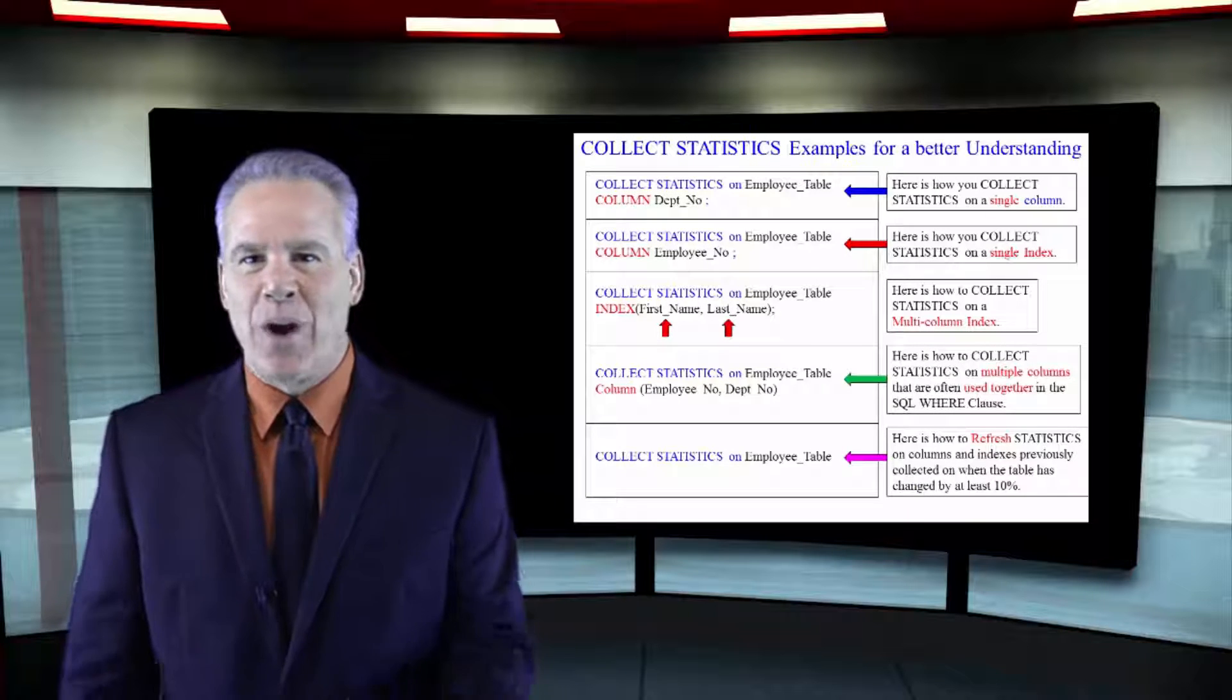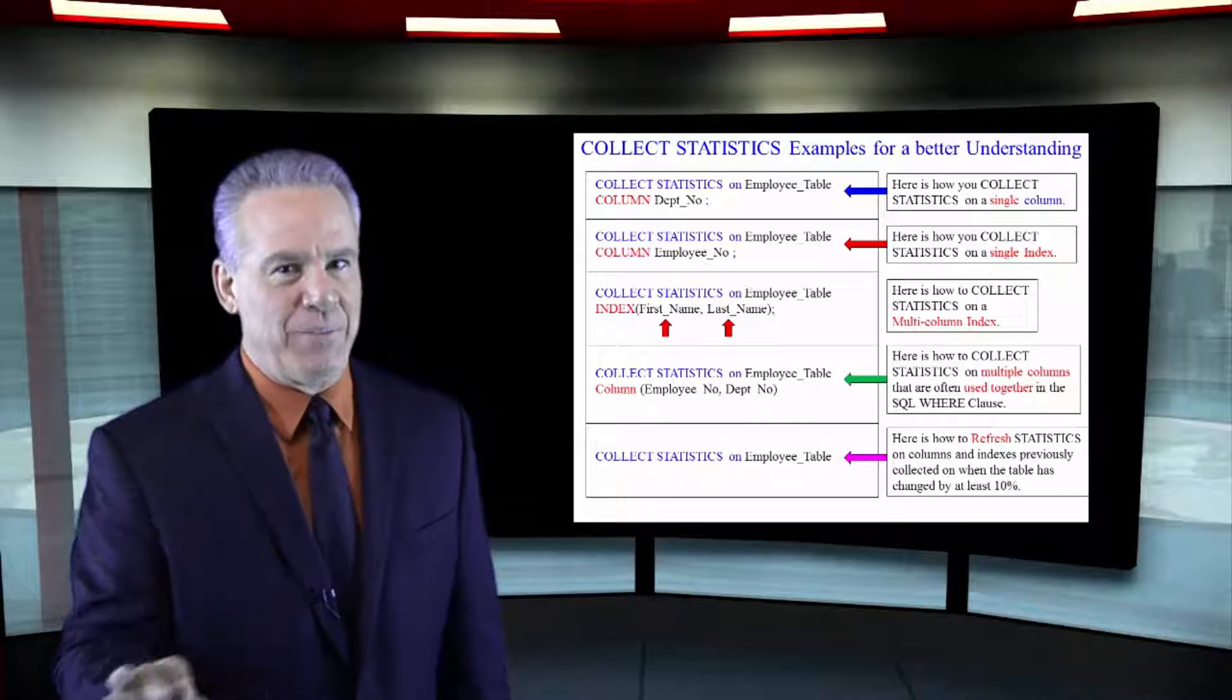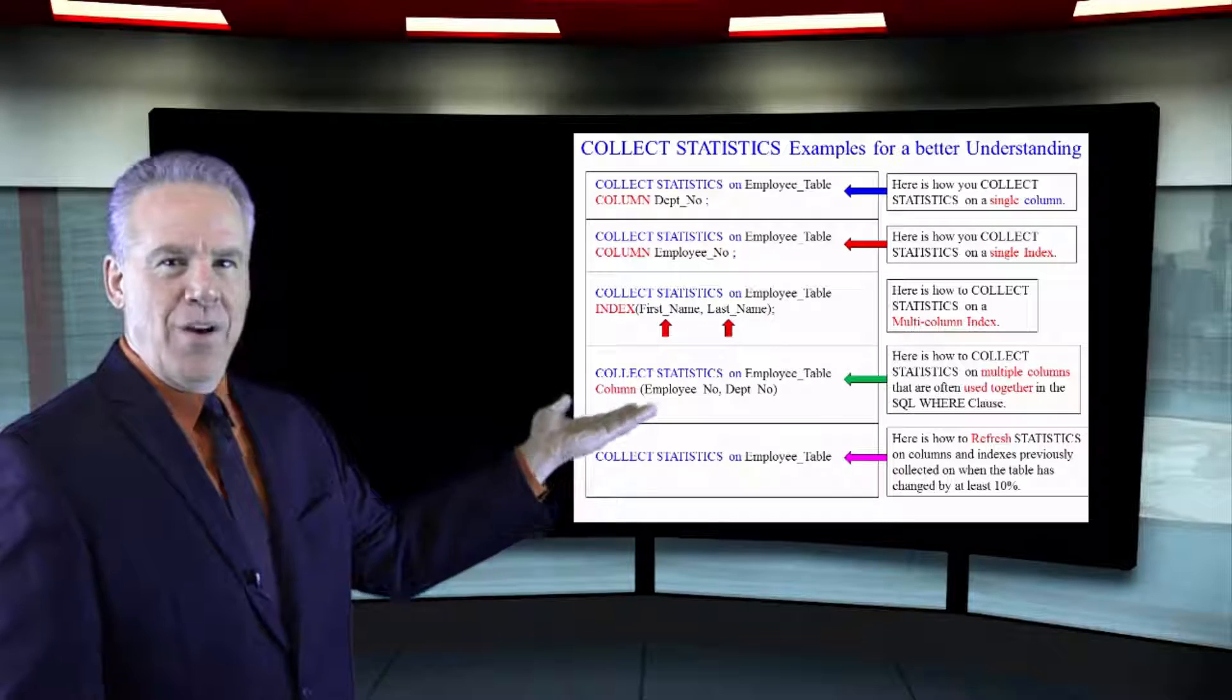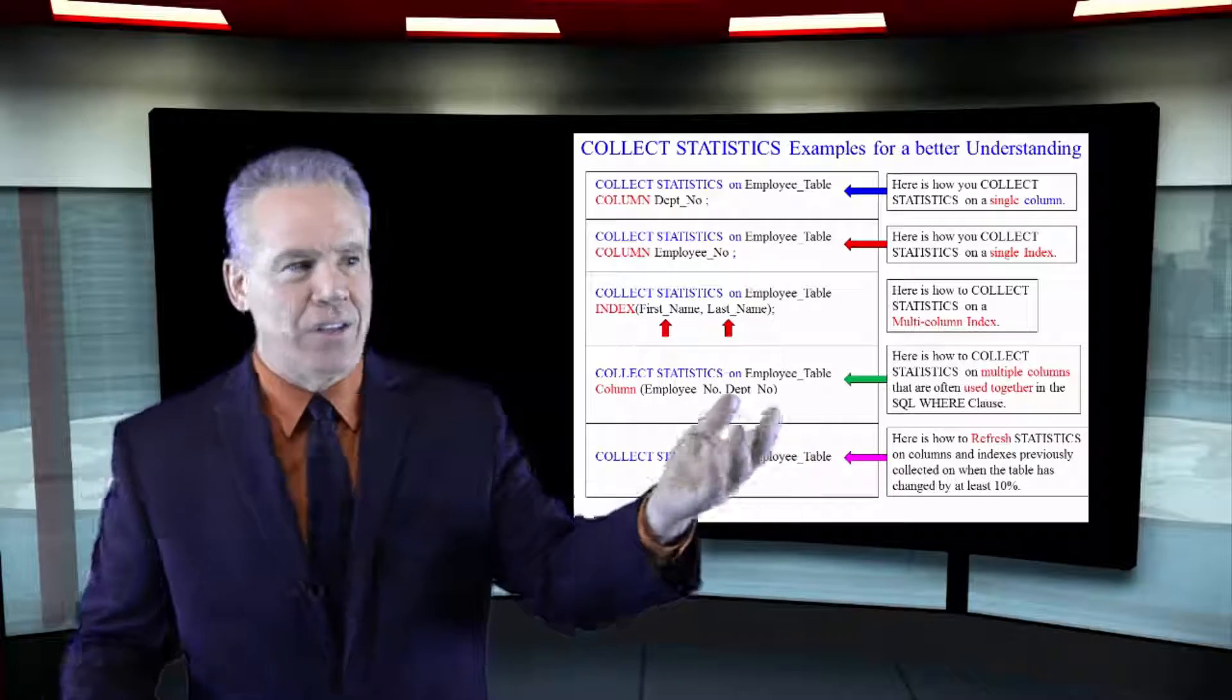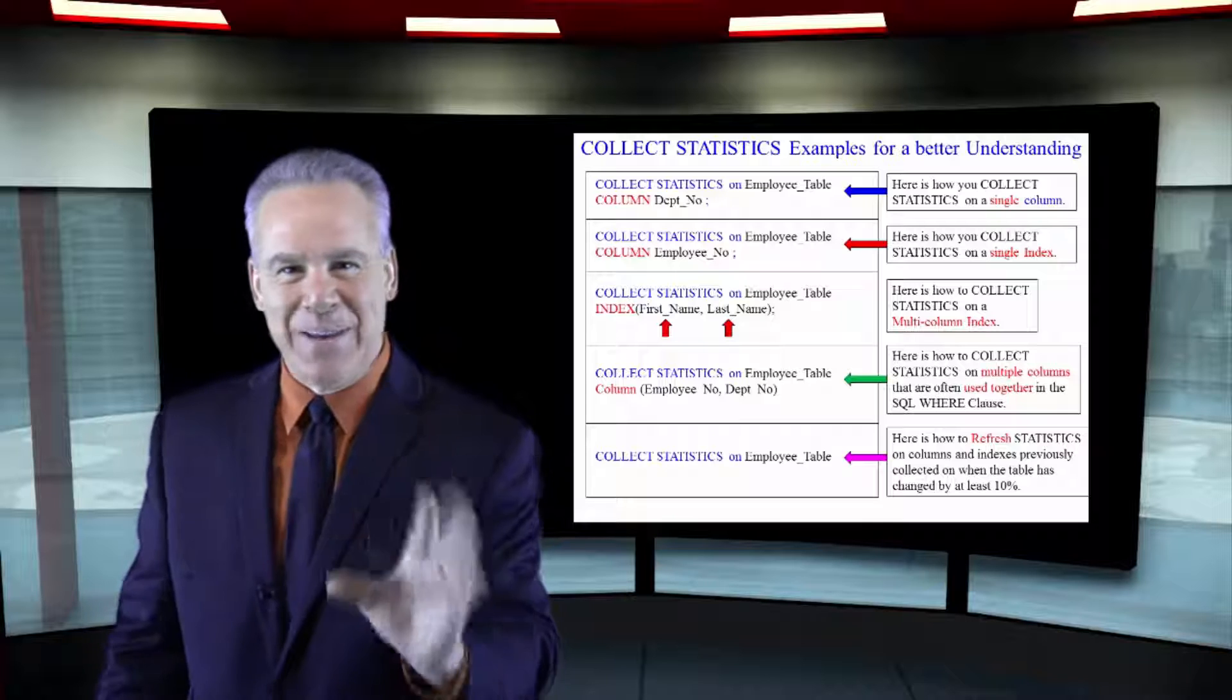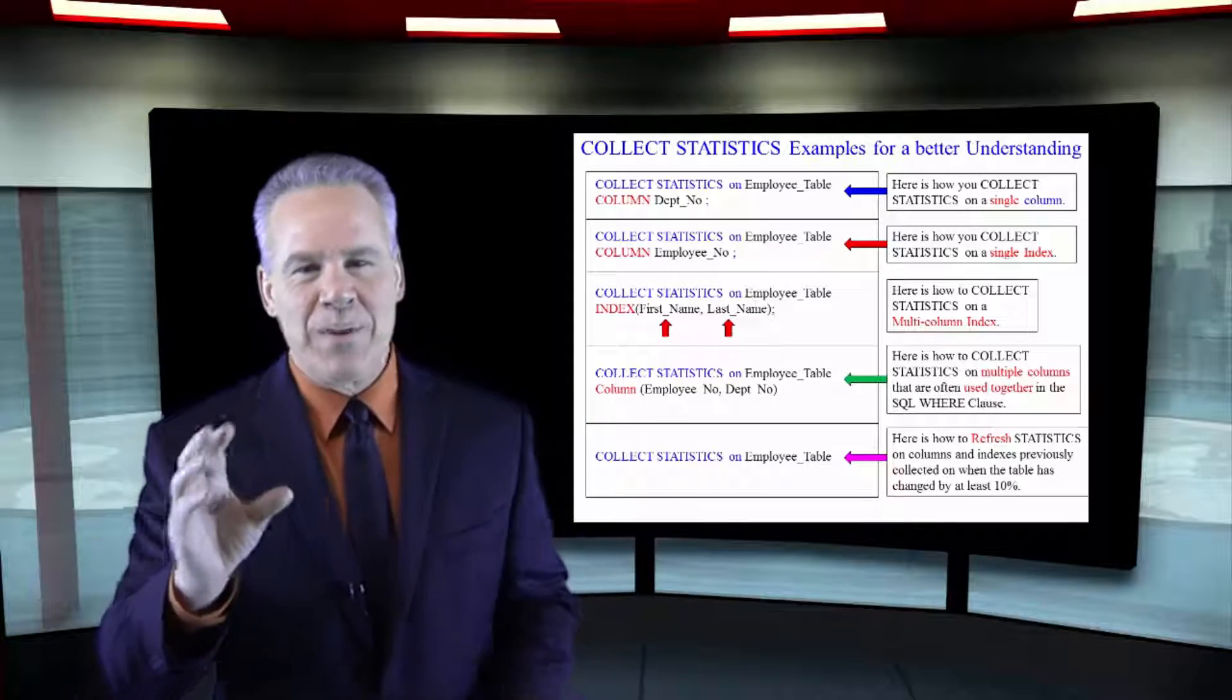This is important, so I want to make sure you see a lot of examples, and the last example is going to really blow your mind. Collect statistics on employee table, column Depno, single column, not an index, that's how it's done. Collect statistics on employee table, column employee number, that's the primary index, but it's a single column index, that's the way it's best done.